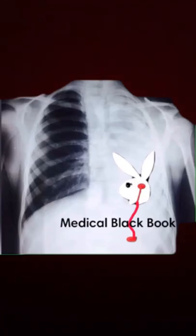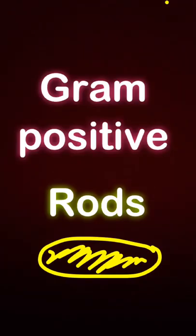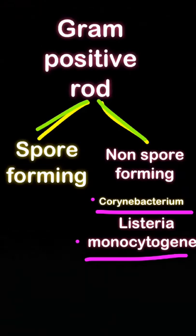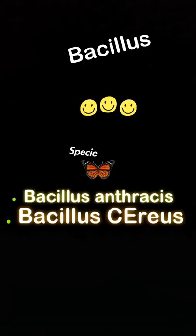Bismillahirrahmanirrahim. Our topic for today is gram-positive rods. Gram-positive rods are divided into two groups: spore-forming and non-spore-forming. The spore-forming includes Bacillus and Clostridium, whereas non-spore-forming includes Corynebacterium diphtheriae and Listeria monocytogenes.